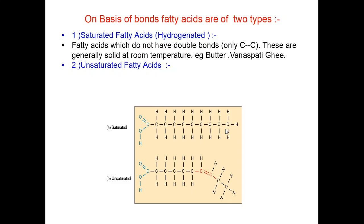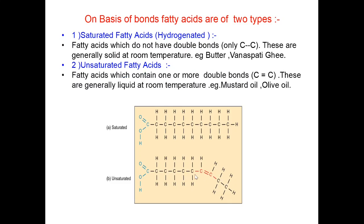Other one are unsaturated fatty acids. Fatty acids which contain one or more double bonds. These are generally liquid at room temperature. For example, mustard oil and olive oil. This is a double bond here. For example, palmitic acid is unsaturated whereas oleic acid is a saturated fatty acid.